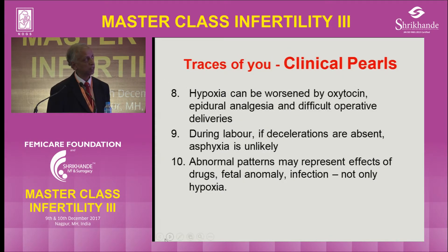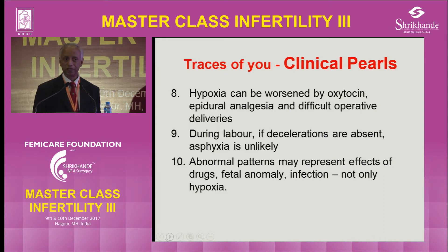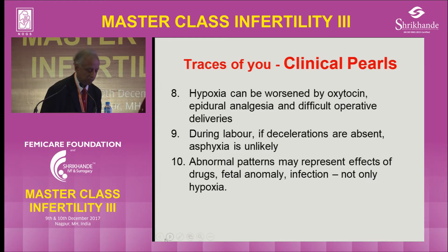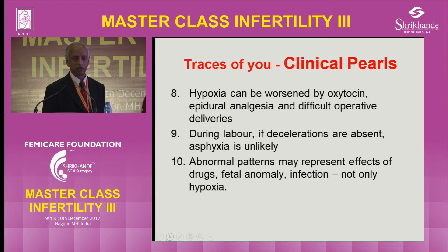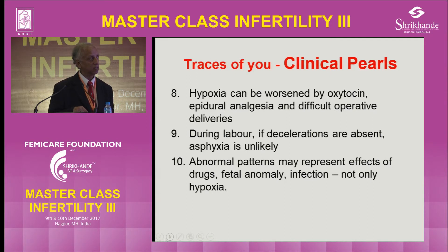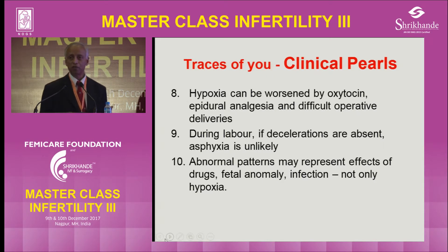Hypoxia can be worsened by oxytocin, epidural, and difficult operative deliveries. Epidural, especially in the late first stage or second stage — if you ask the mother to bend down — might compress the uterine vessels. During labour, if decelerations are absent, asphyxia is unlikely. If the trace is abnormal without decelerations, you must look for other reasons such as fetal anomaly, drugs, or infection — not only hypoxia — because the CTG can be abnormal due to other reasons as well.